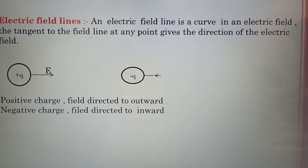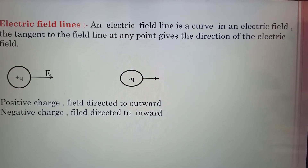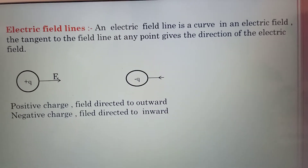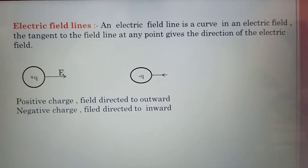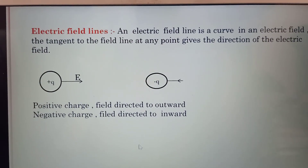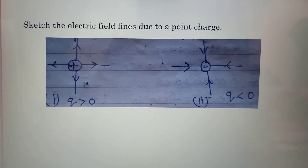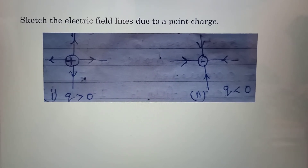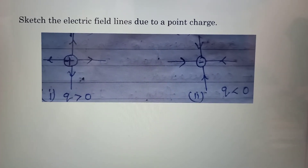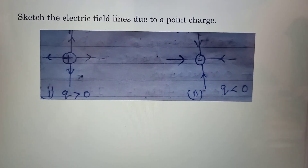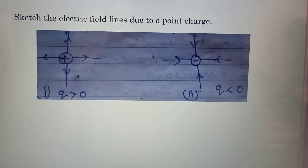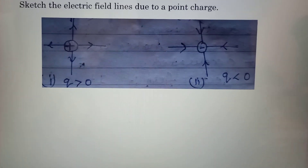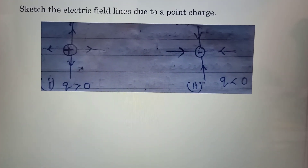Electric field lines. Draw the line at any point on the charge — that line represents the direction of the field. Positive charge: field directed outward. Negative charge: field directed inward. For an isolated positive charge (Q > 0), field lines are directed outward. For an isolated negative charge (Q < 0), field lines are directed inward. Electric field lines are open lines and do not form any closed loops.